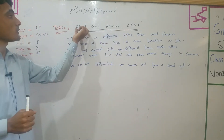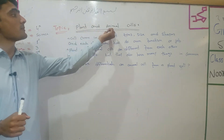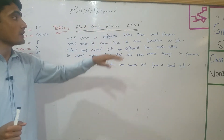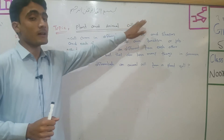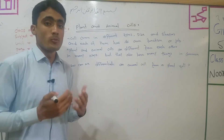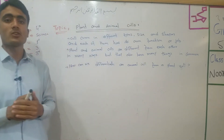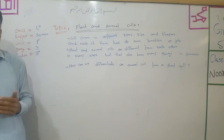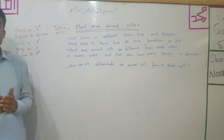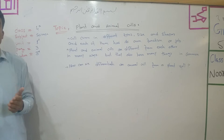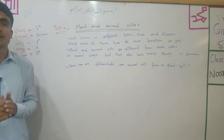Plant means 'fothering', animal means 'genre', and cell means 'chaliyah'. We have discussed in previous videos that we have unicellular organisms and multicellular organisms.